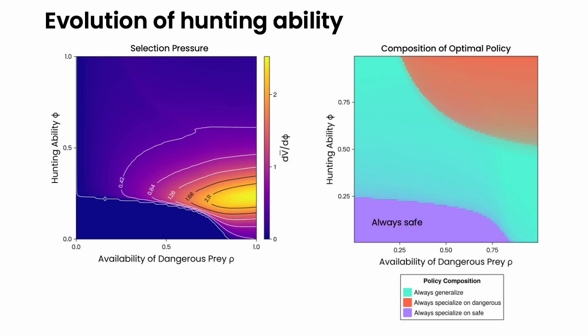And in the same region, it is optimal to always go for the safe prey, which means that even if the individual has a slightly higher hunting ability, it will not give it any benefit because it is not hunting any dangerous prey.